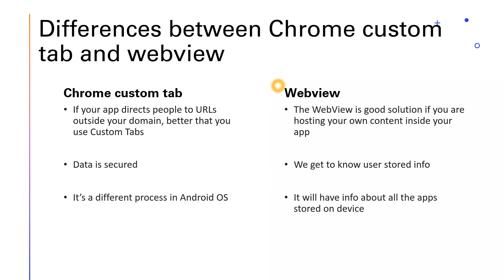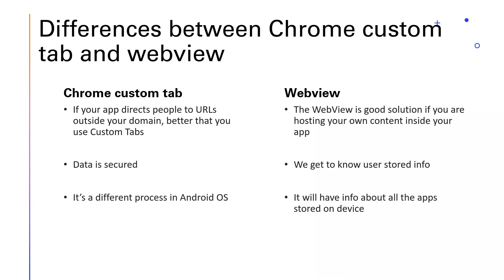Let's see the difference between Chrome Custom Tab and WebView once more. If your app directs people to URLs outside your domain, you should use Chrome Custom Tab. WebView is a good solution if you are hosting your own content inside your application — when you are writing and displaying your own content within your app, WebView is the best choice to use.